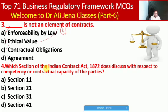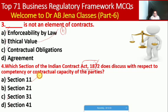Next MCQ: which section of the Indian Contract Act 1872 discusses the competency or contractual capacity of the parties? Whether Section 11, Section 21, Section 31, or Section 41. Here A is the right option — Section 11.